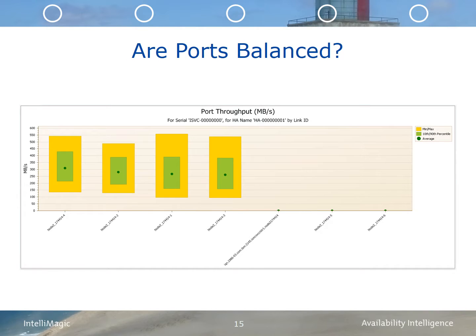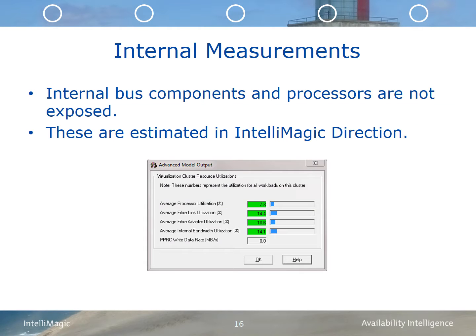Similar to the node balance, within the nodes we would like to see that the ports are fairly evenly balanced. In this example, we show a host with six ports. Only four of them are active. The iSCSI port and the fifth and sixth port are inactive at this time. The balance that we see on the active ports is good, but we would like to see activity across all of the available ports, especially if those active ports are running at a very high load.